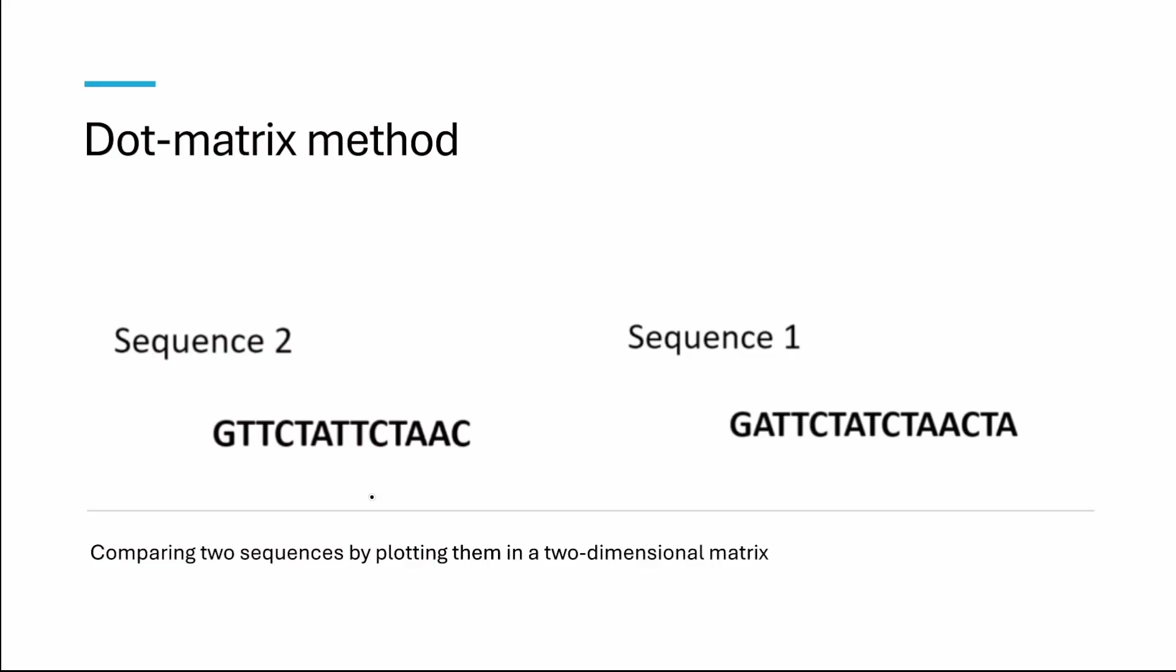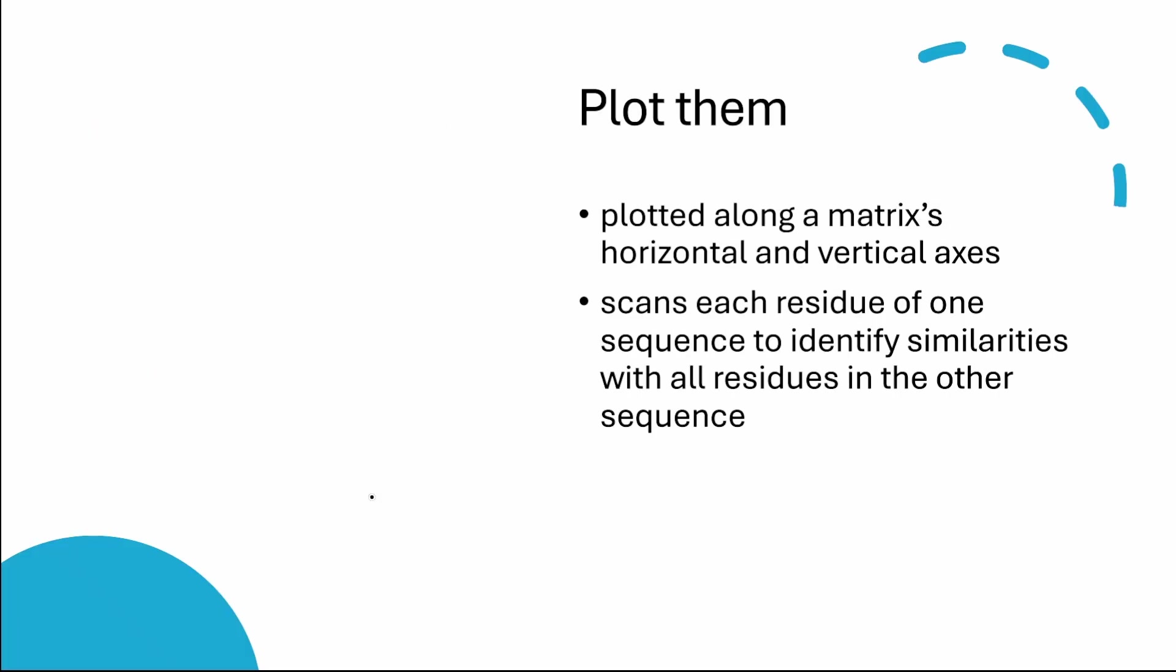In a dot matrix, two sequences that must be compared are plotted along a matrix horizontal and vertical axis.